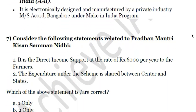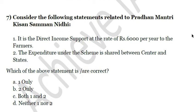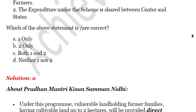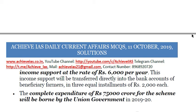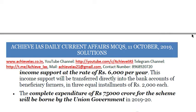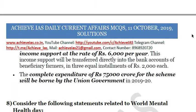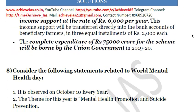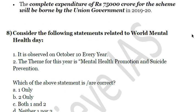The seventh question: 'Consider the following statements related to Pradhan Mantri Kisan Samman Nidhi.' First: it is direct income support at the rate of Rs. 6,000 per year to farmers. Second: the expenditure under the scheme is shared between the centre and states. Only the first statement is correct. It is direct income support at Rs. 6,000 per year to farmers with land holdings of 2 hectares or below, and the expenditure is solely borne by the central government. The complete expenditure of Rs. 75,000 crore for the scheme is borne by the union government in 2019–20.